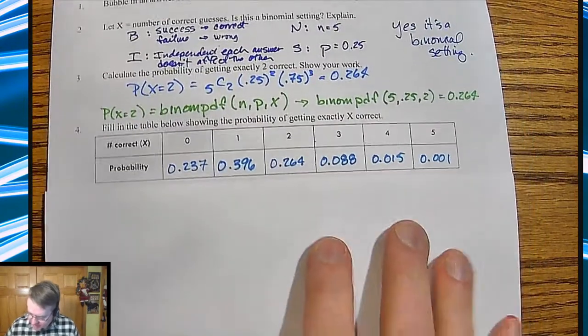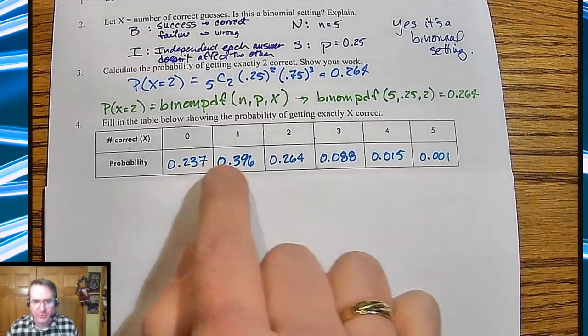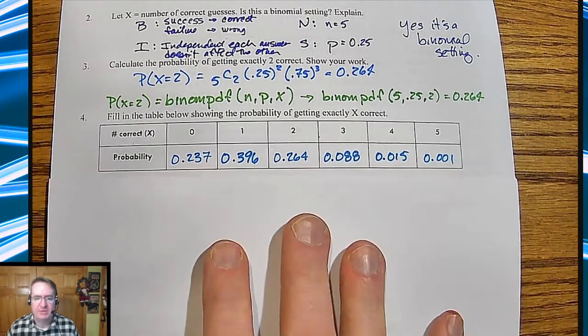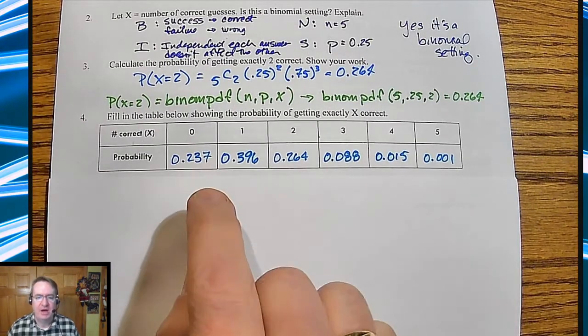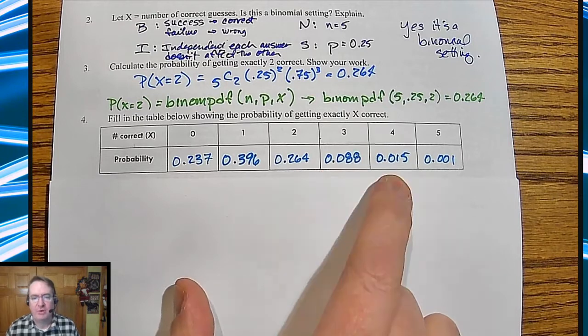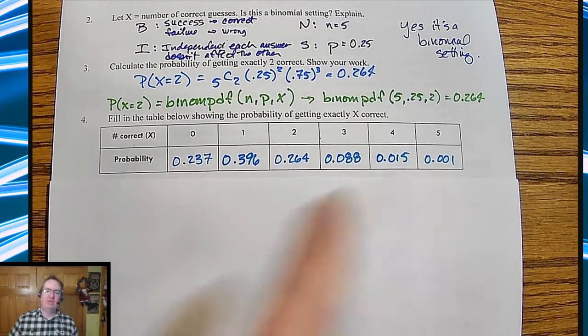You go through and calculate out the rest of these. These are the probabilities of getting zero correct, one correct, two correct, three correct, four correct, and five correct.